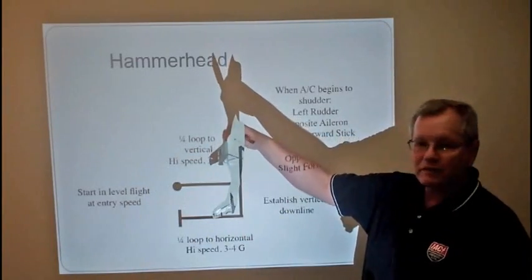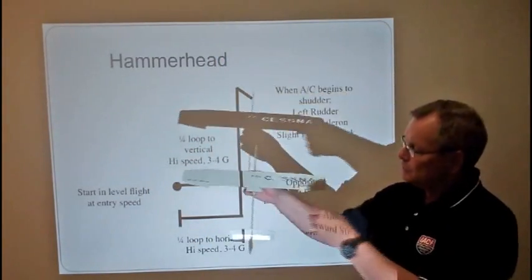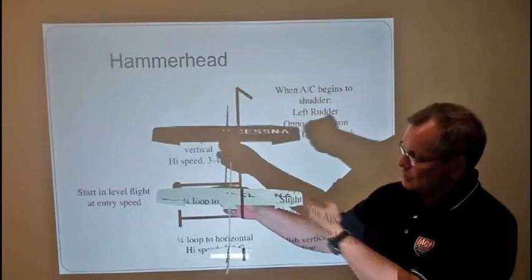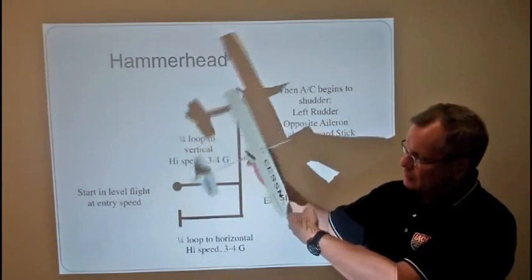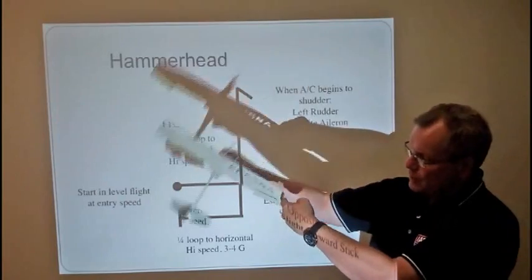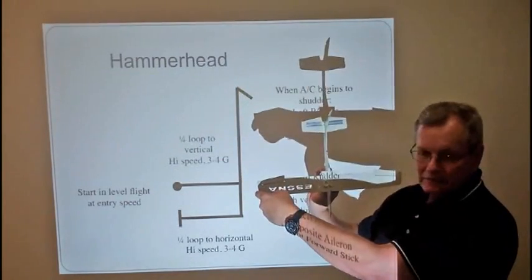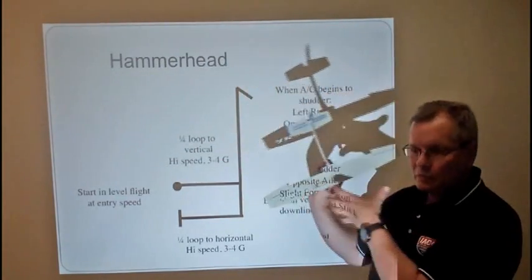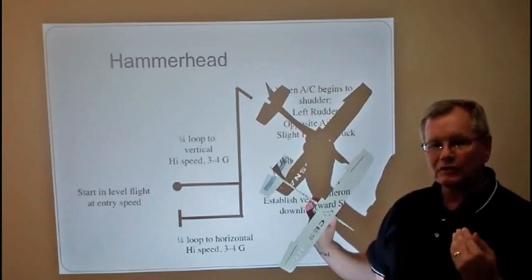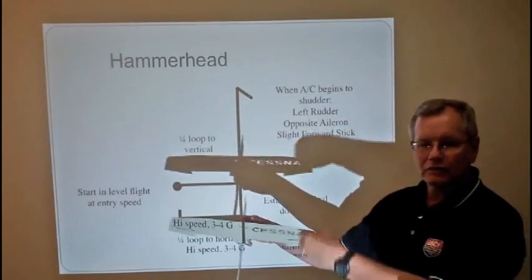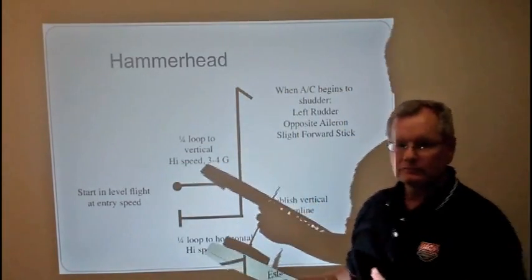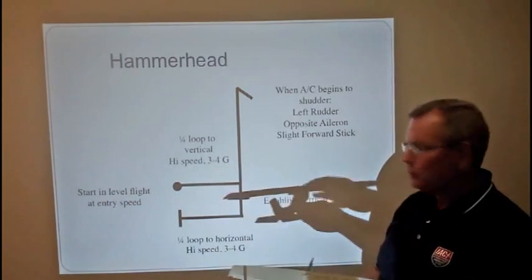But as you do the pivot, you must be able to pivot within a half a wingspan. So what they're looking for is that you're no further away than that. Anything more than a half a wingspan, and that's when they start taking points off. For every half a wingspan that you are out from your original point, that's another point off. You start with a 10 and then you start losing points.